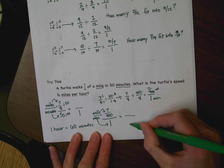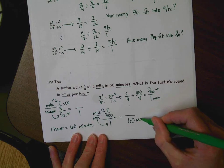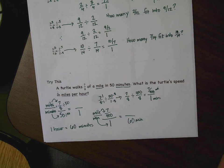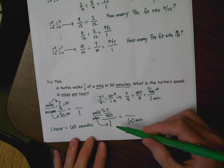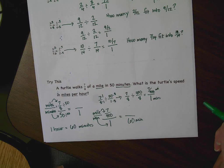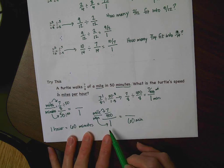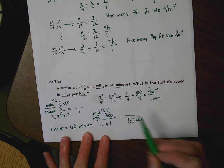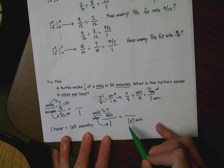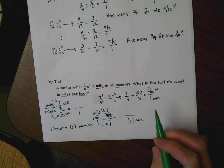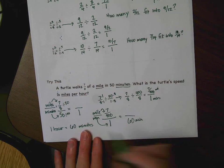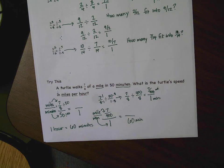Now we want 60 minutes, because 60 minutes equals 1 hour. Ask yourself: how did I get from 1 to 60? What you do to one side, you have to do to the other. Once you know that answer, you've found the distance in 60 minutes — which is the same as 1 hour. That gives you the turtle's speed in miles per hour. I'll leave that for you to finish by yourself.